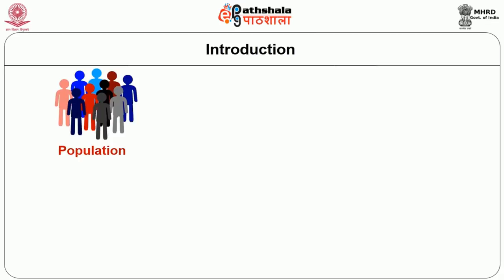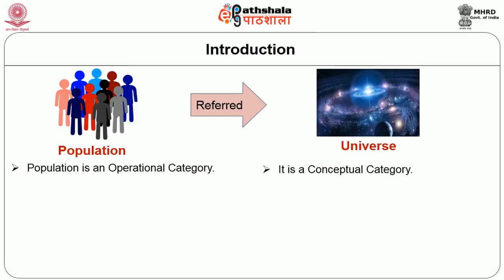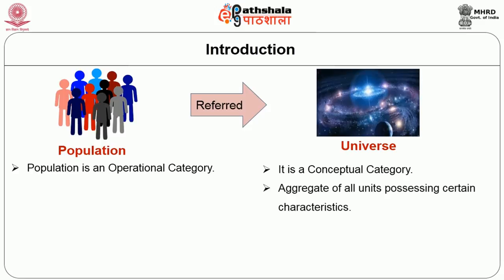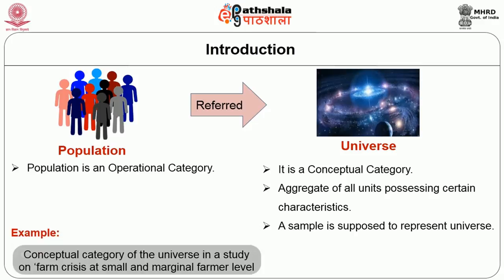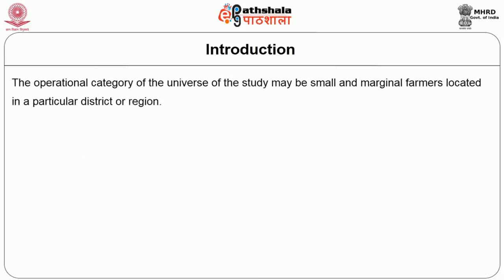Population is also often referred to as universe. However, the difference between the two is that universe is a conceptual category while population is an operational category. Universe is the aggregate of all units possessing certain characteristics, and a sample is supposed to represent the universe. For example, in a study on farm crisis at the small and marginal farmer level, the conceptual universe refers to all small and marginal farmers of the country, while the operational category may be small and marginal farmers located in a particular district or region.